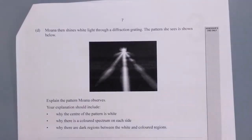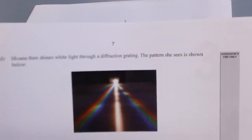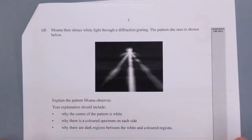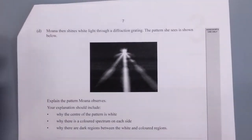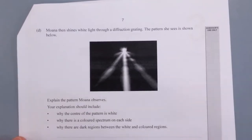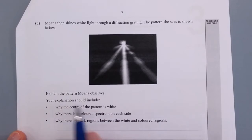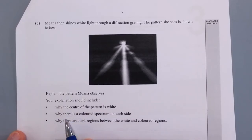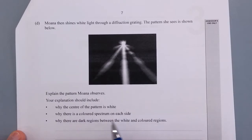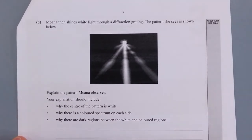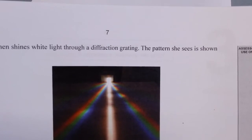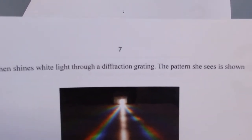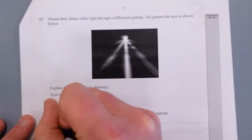Last question. So I have the actual color. I printed out in color, and I didn't realize that I printed the second one in black and white. I normally do it first, so I don't actually know what I'm doing. Right. So Moana then shines the white light into the diffraction grating. The pattern she sees is shown below. Explain the pattern Moana observes. Your explanation should include: why the center of the pattern is white, why there is a colored spectrum on each side, and why there are dark regions between the white and colored regions. So if we just go back to the colored thing, you can see you get a rainbow with violet being closer to the center and red being further away, and then obviously a white spot in the center. So let's just answer the first one. Let's put a star or a bullet point.